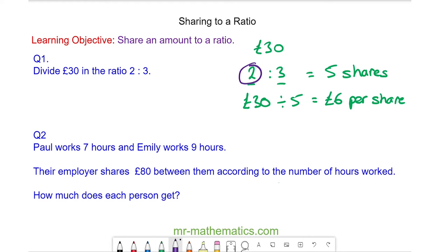In the ratio two to three, we have two shares which is two times six pounds, and that has a value of £12. And here we have three shares which is three times six pounds, which is £18.